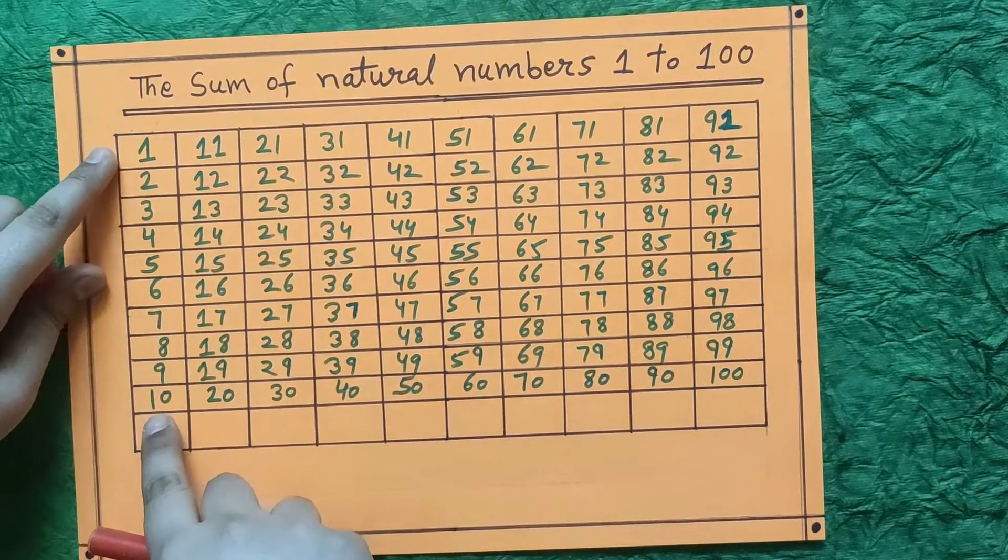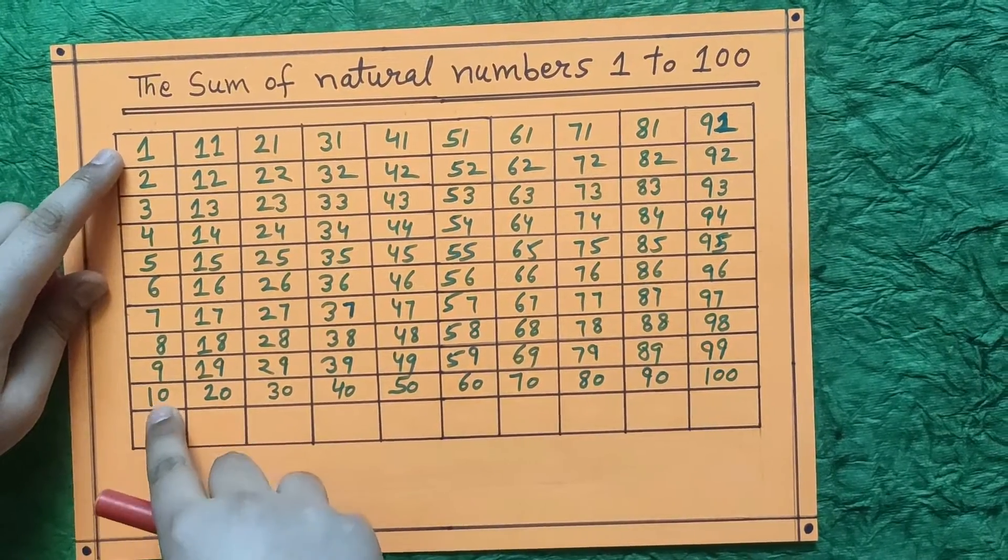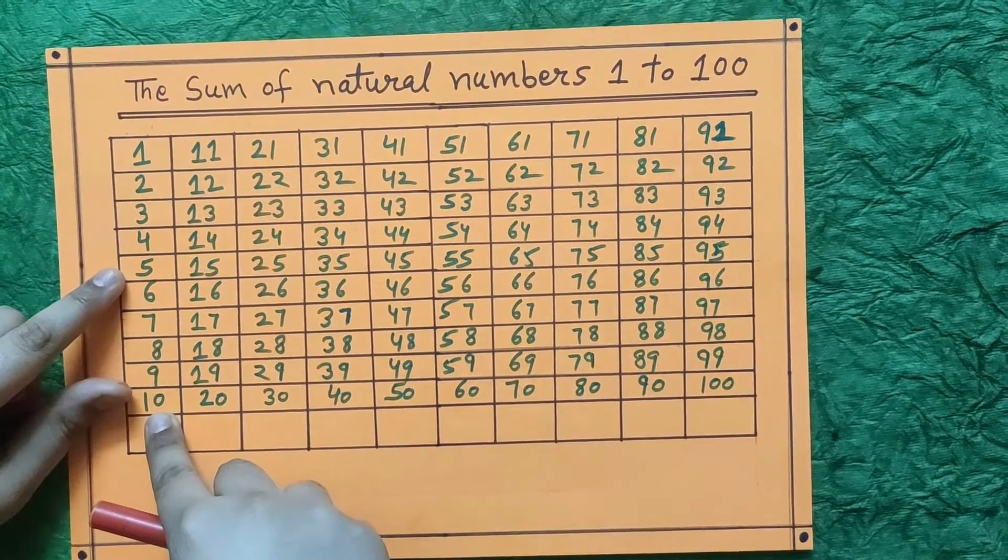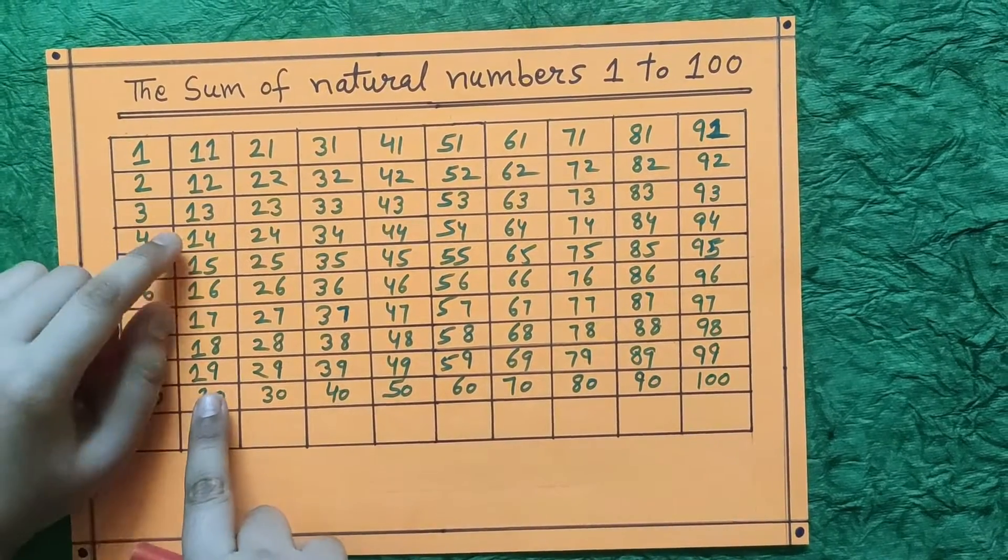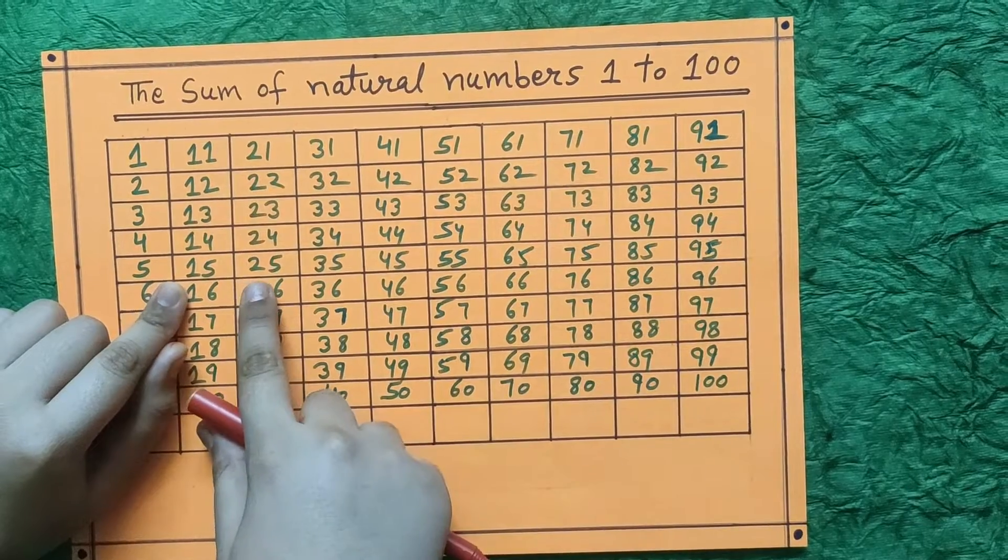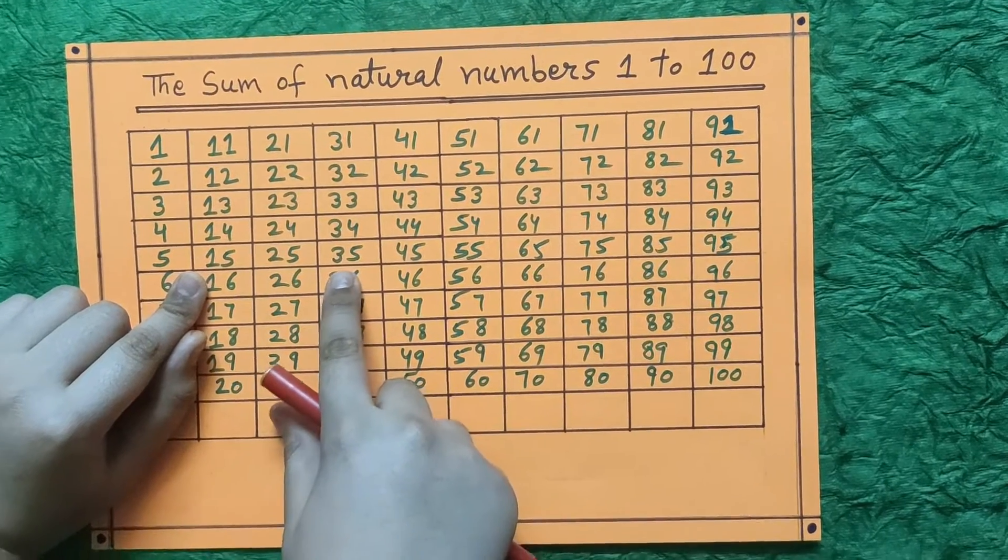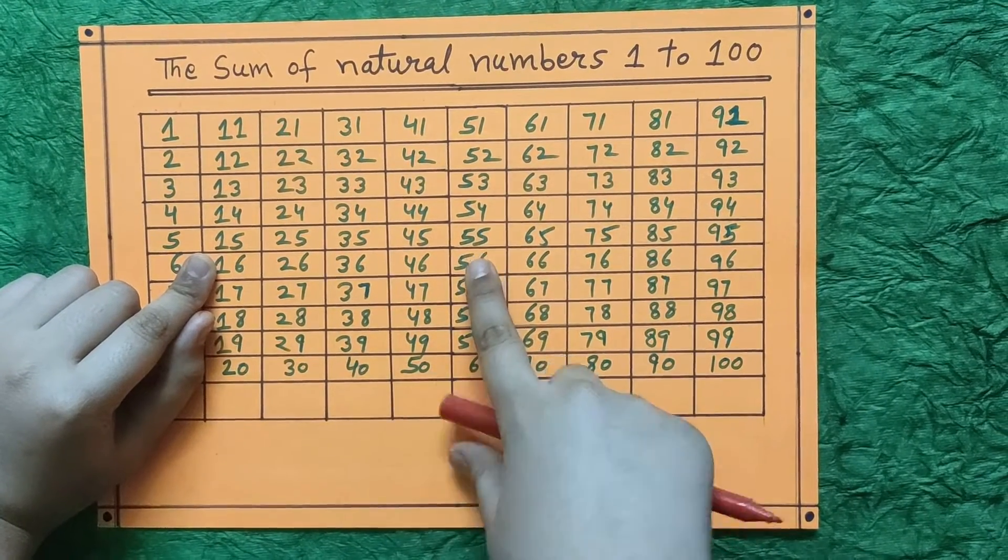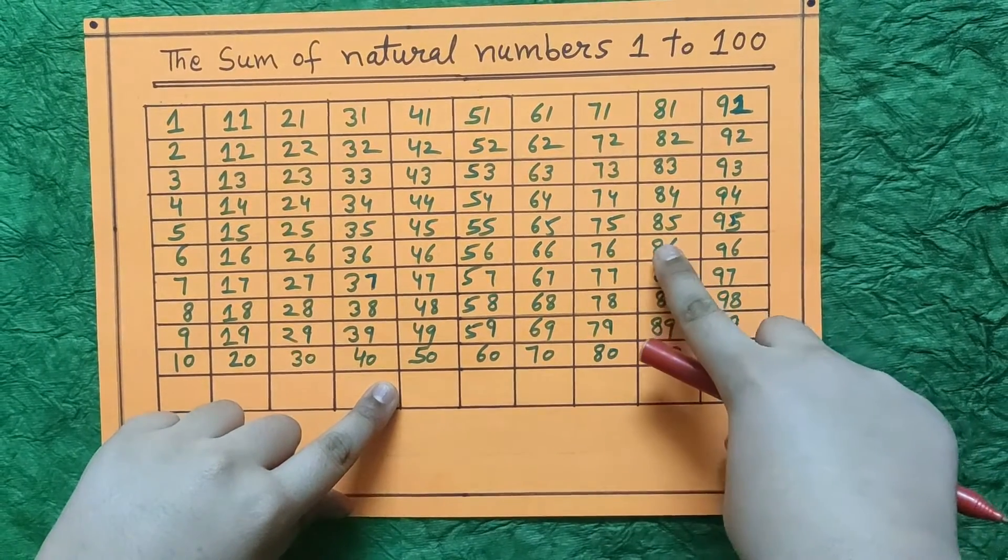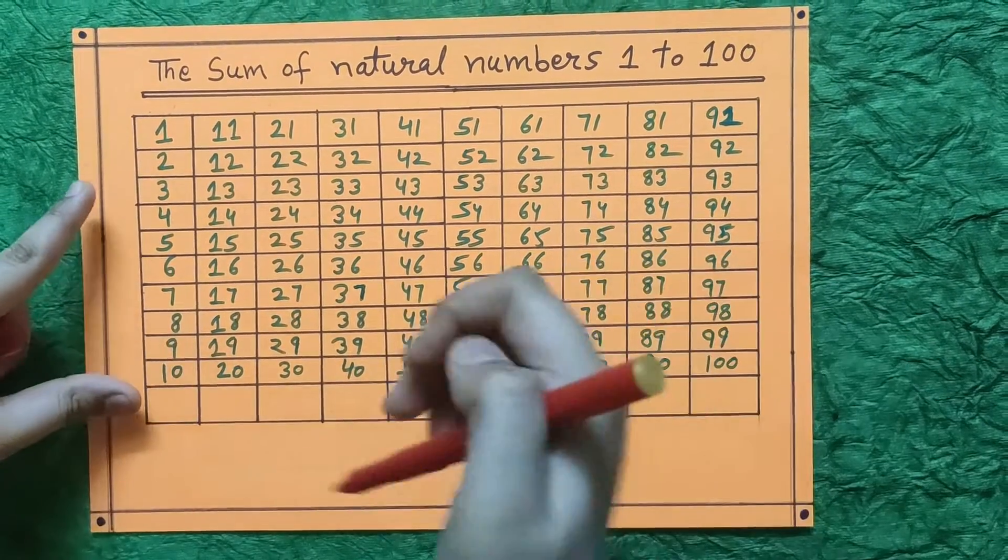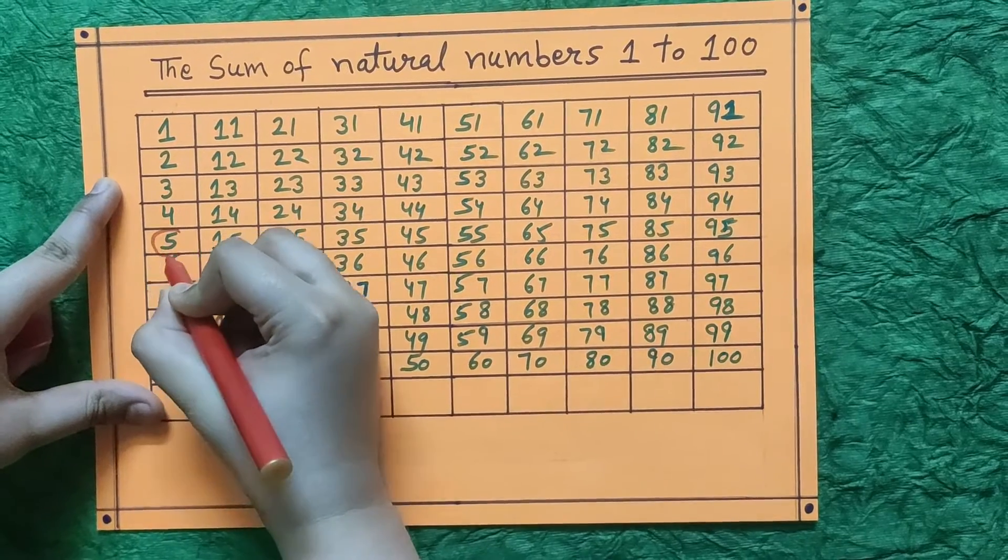In this line 1 to 10, the center point will be 5. In this line 15, in this line 25, 35, 45, 55, 65, 75, 85, and 95. So we will circle all of them.